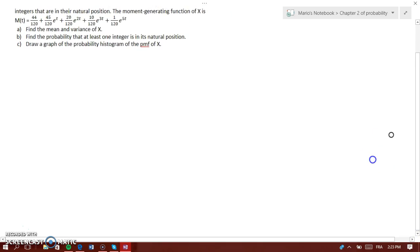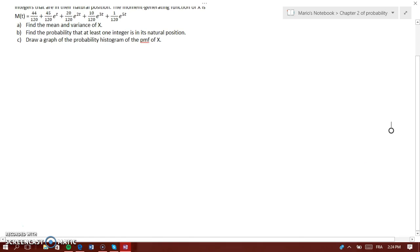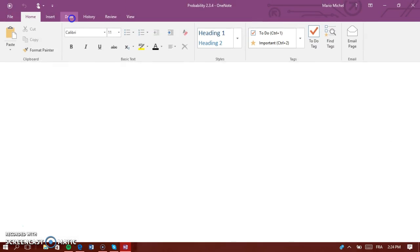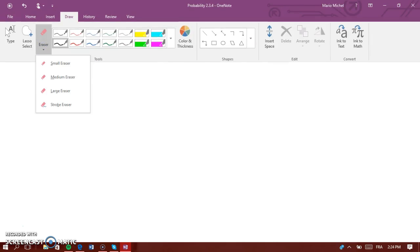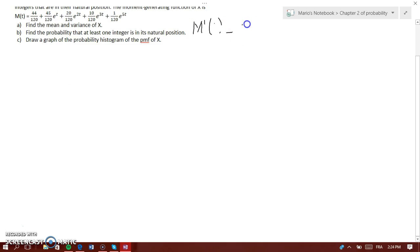So let's find the mean and variance of X. To find the mean, we know that you find the first derivative and evaluate it at zero. That'll be 0 plus 45, when you take the derivative.